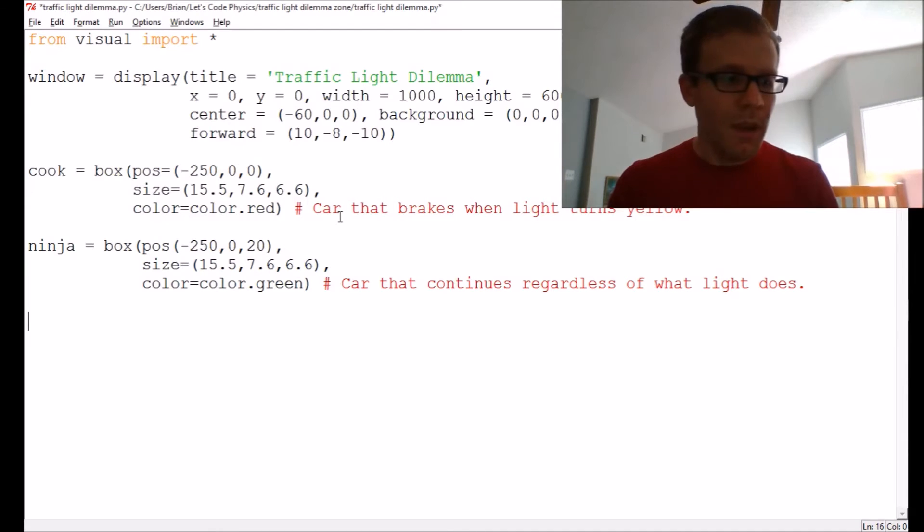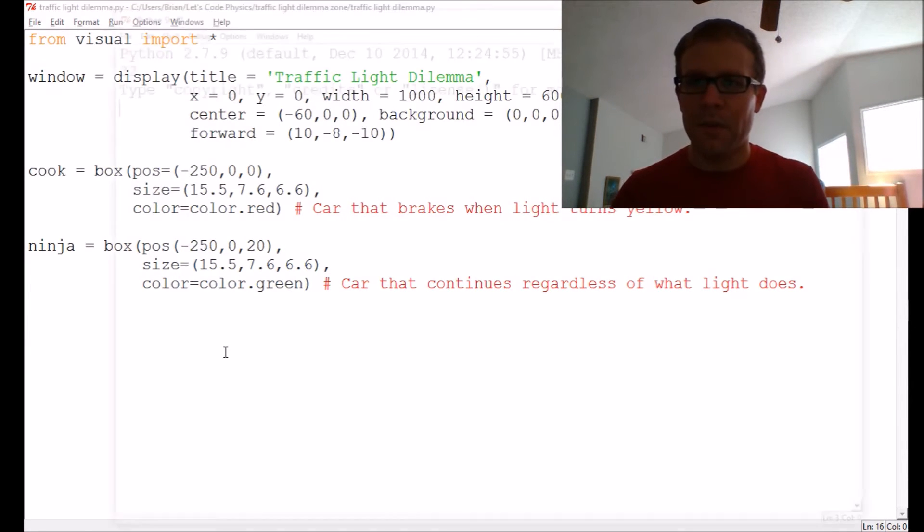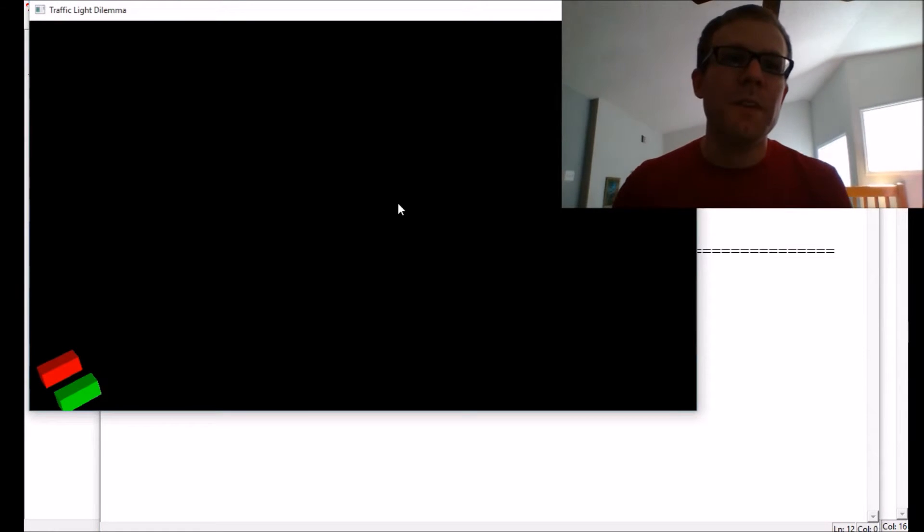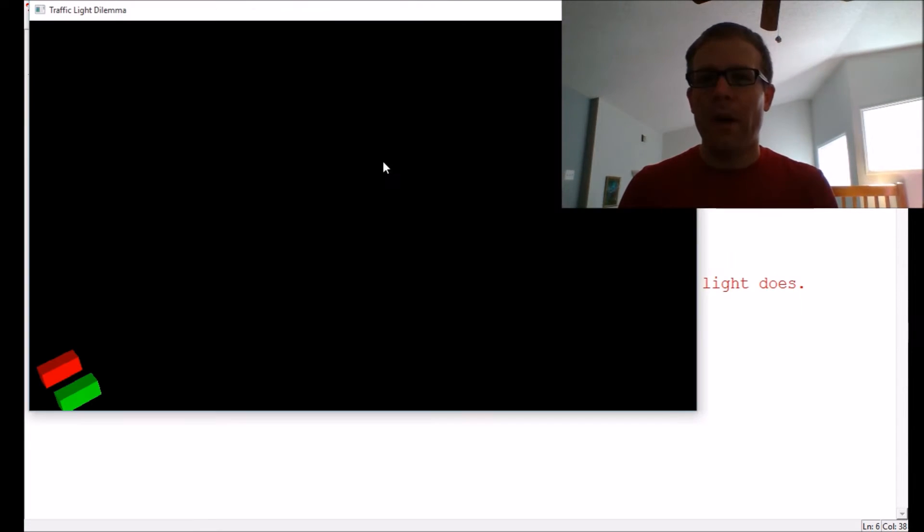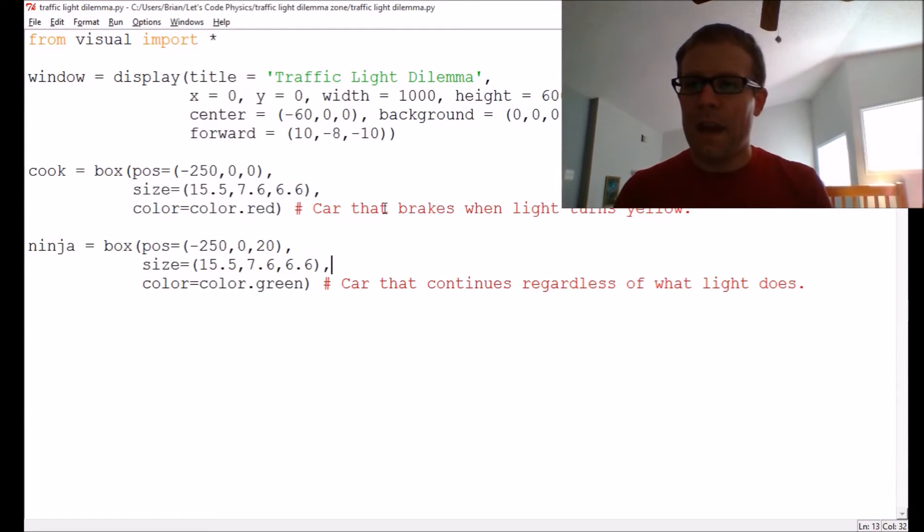So we've created the cars. Let's run the code and make sure that that set things up appropriately. Uh-oh, pause is not defined. Oh, whoops. This is not position function. This is position equals. There we go. Okay, so what we've got here is we've got our animation window where we've got the two cars. So the red car is Cook. The green car is Ninja. Now, I've set up the window to give us sort of a dramatic angle, so you'll notice that it has the forward direction as 10, negative 8, negative 10, and that way we're going to be looking in the, the intersection is going to be over here, and so we'll be able to see these two as they go forward and cross the intersection.